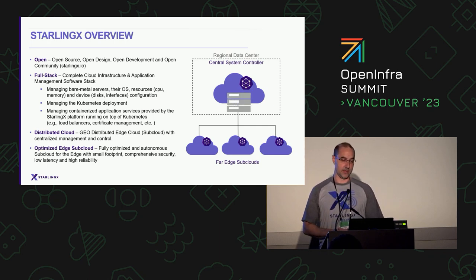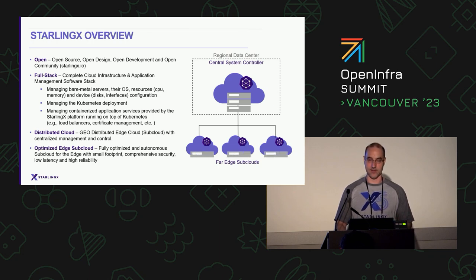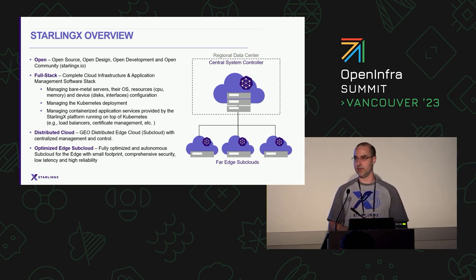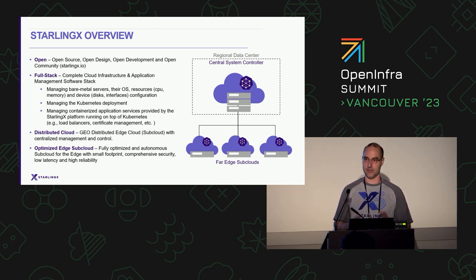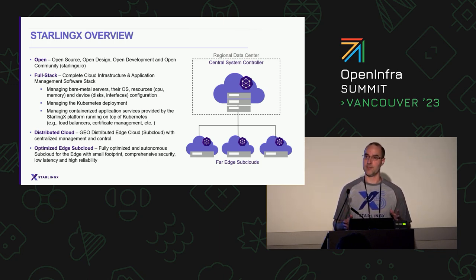Right now this deployment architecture is based on a bare metal deployment, so that regional data center is deployed on physical servers providing manageability for edge sites all running StarlingX, Kubernetes, and the end-to-end distributed cloud architecture. Each site is an independent Kubernetes cluster. At the central region we run a cluster with all centralized services, and each edge site is an autonomous edge cloud. Overall we treat it as one big geographically distributed system.